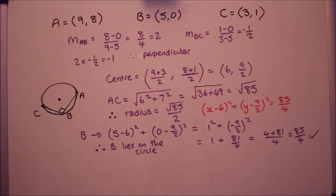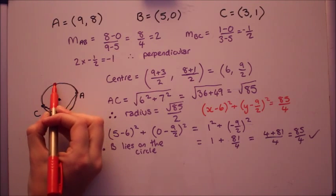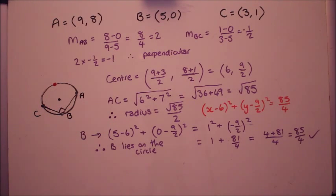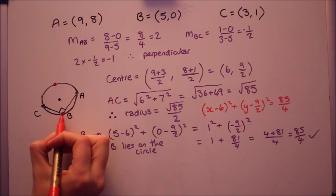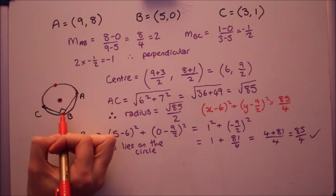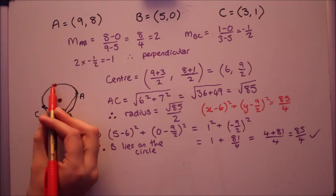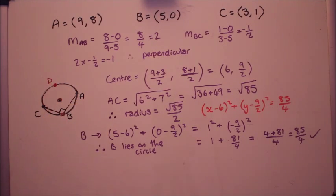The very last part of the question, if I can squeeze this on the end, this is a really common trick as well that comes up so do be aware of this one. We're given now that d forms the diameter with b so it's going to be up there. Now there's a really easy way of doing this if you've seen this trick and that is you know the coordinates of b, you know the coordinates of the circle. So you can figure out how you get from b to the center, do that again to get from the center to d. I'll show you what I mean.